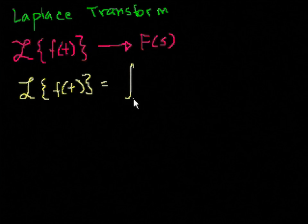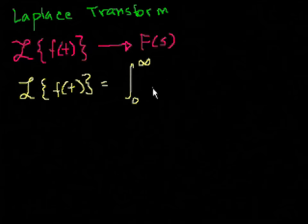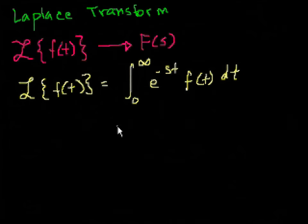The improper integral from 0 to infinity of e to the minus st times f of t. So whatever is between the Laplace Transform brackets, dt. Now that might seem very daunting to you and very confusing, but I'll now do a couple of examples.